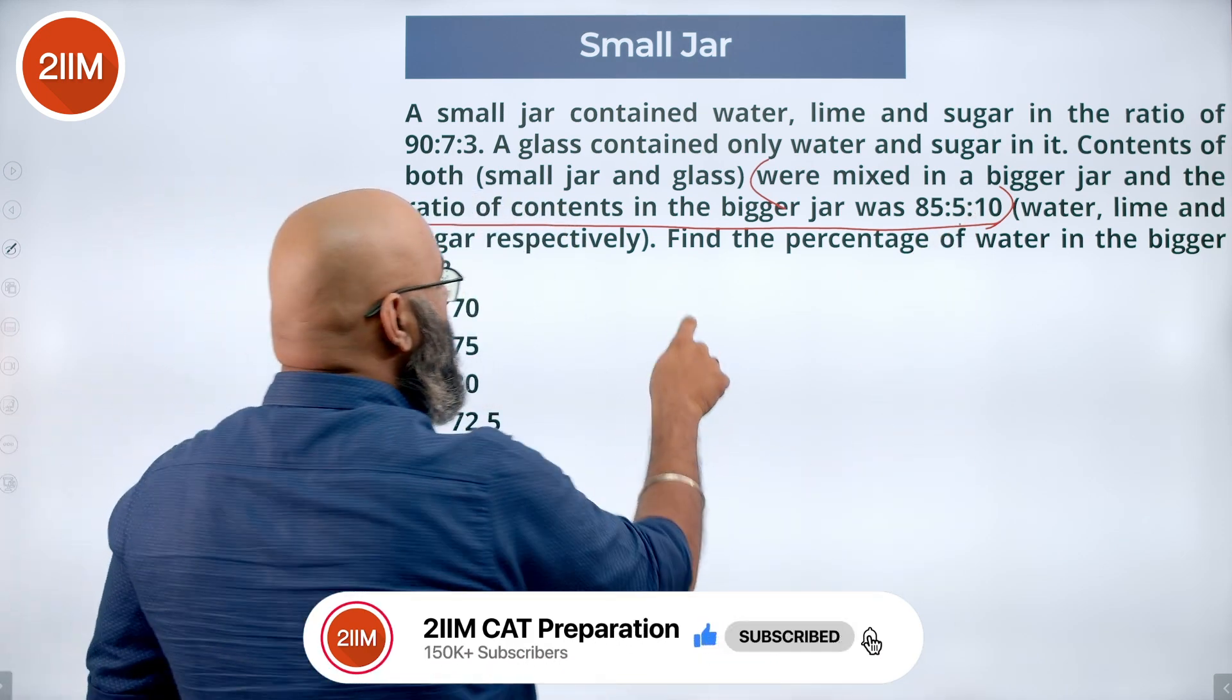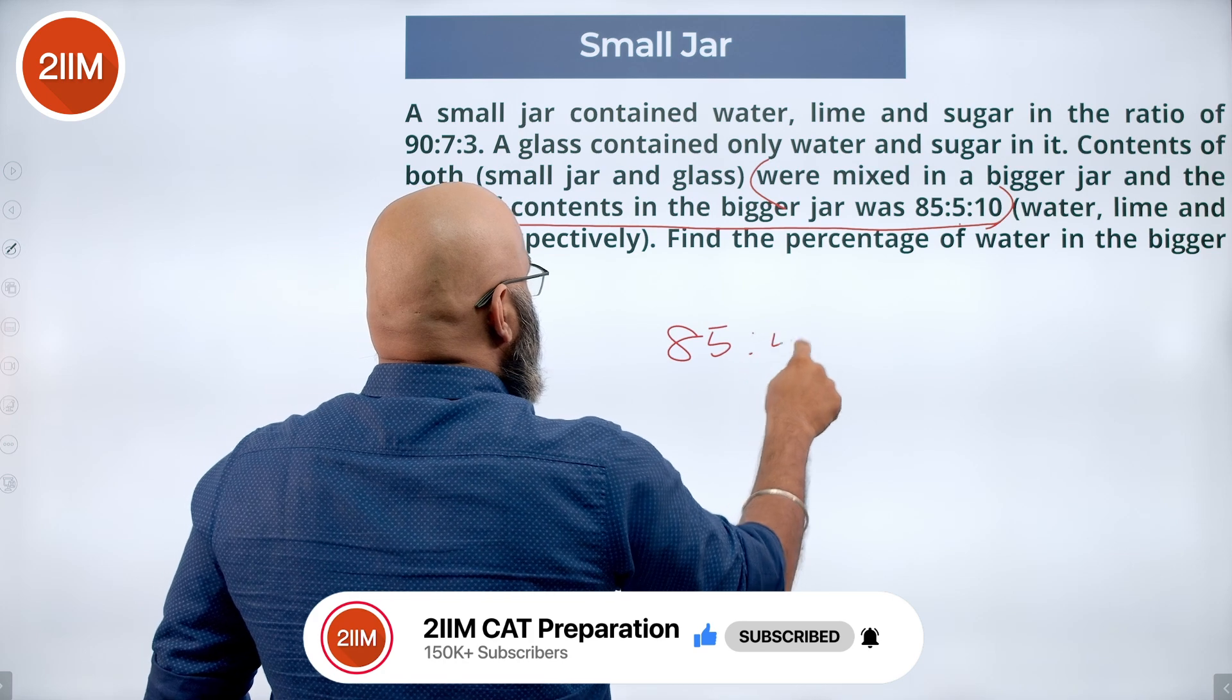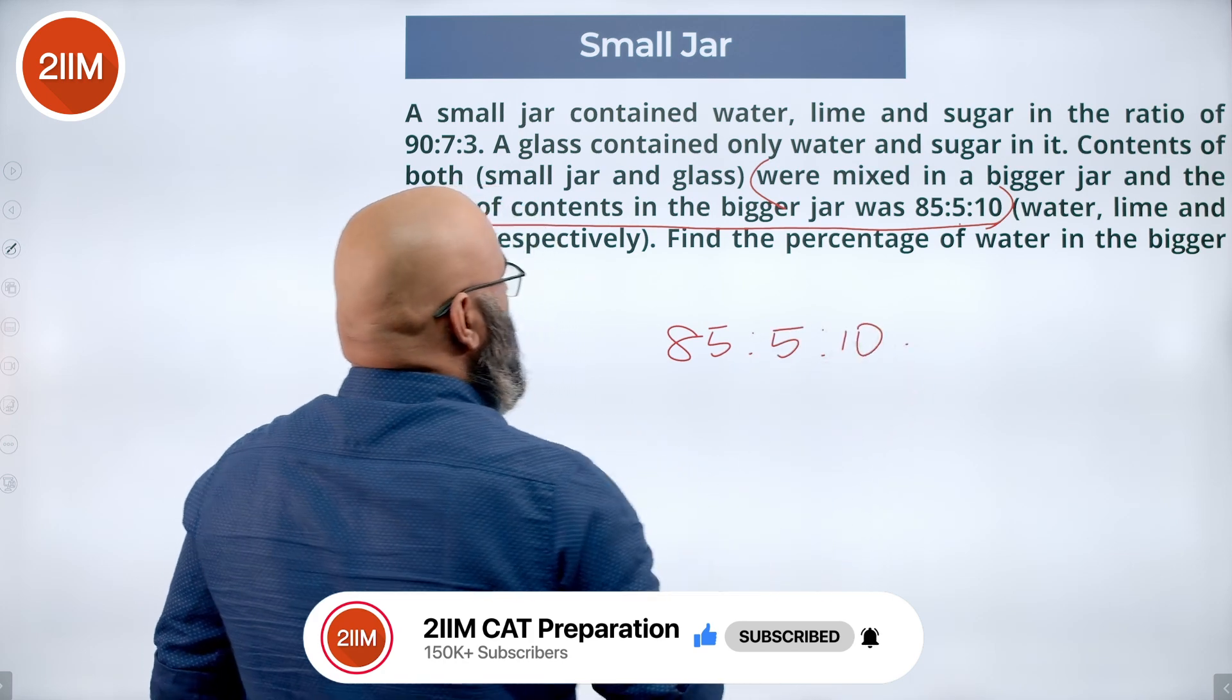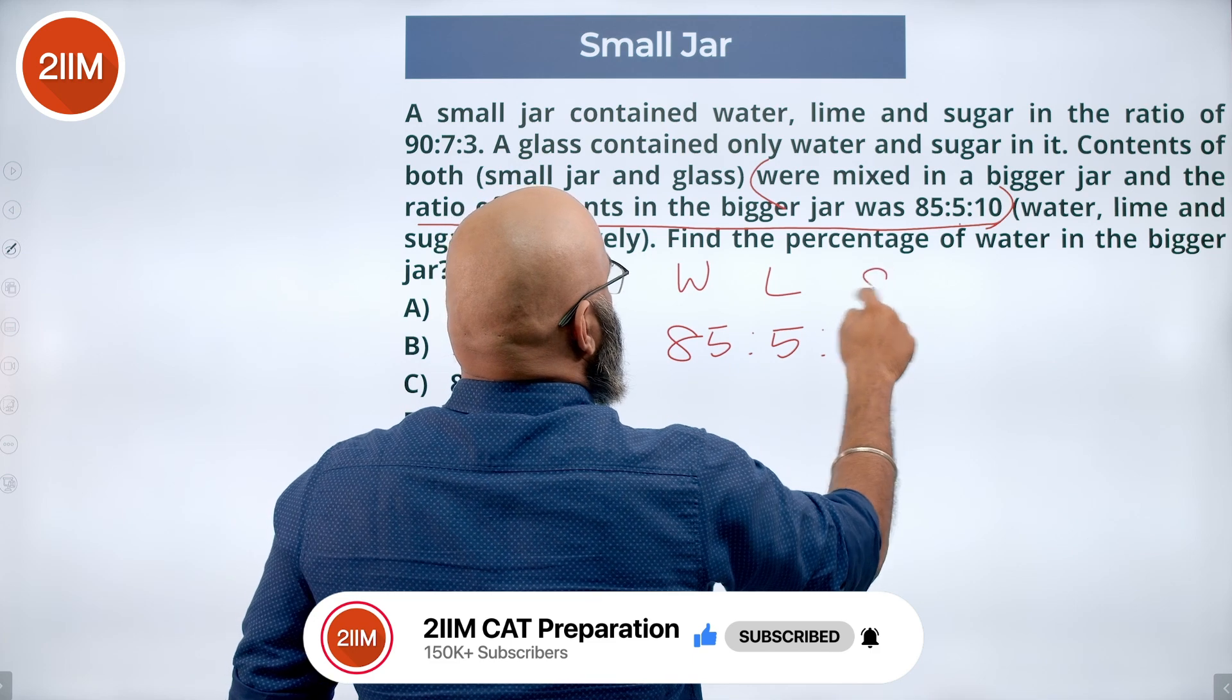Now what do you mean by 85:5:10? In the bigger jar, this is water, lime, and sugar.